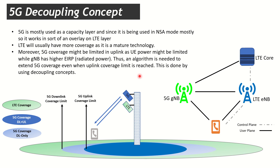In NSA, LTE needs to be present to support 5G — 5G cannot exist on its own. A user will always have the control plane on LTE, so the RRC plane resides on LTE. The user plane can be on both LTE and 5G. So we have a user plane on 5G but no control plane there, while the control plane is only on LTE.